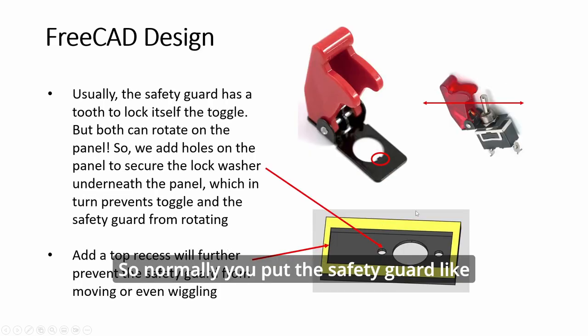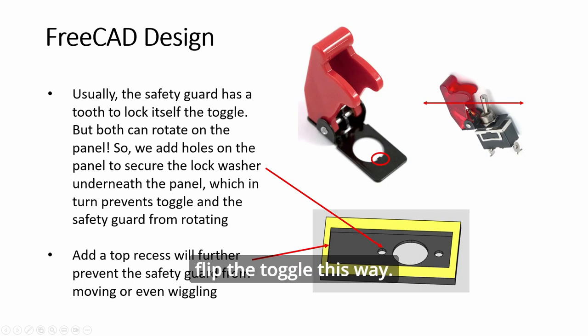So normally you put the safety guard like this and then you flip the toggle this way. So two ways to secure the toggle from spinning.